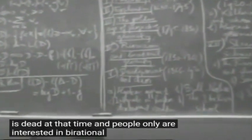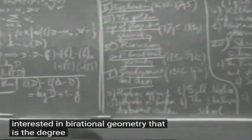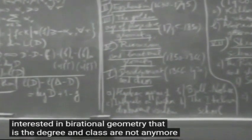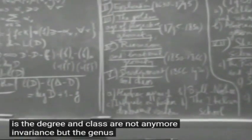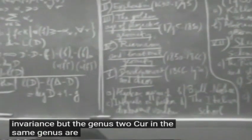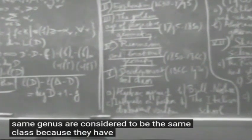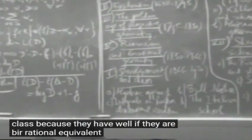And the people only are interested in birational geometry - that is, the degree and class are not anymore invariants, but the genus. Two curves in the same genus are considered to be the same class because they are birationally equivalent.